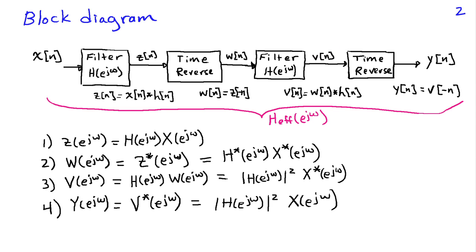Then we're going to apply a time reversal property to obtain the final output, Y(e^jω), which is going to be V*(e^jω). And replacing v with what we had in the previous step, we see that we end up with the magnitude of H(e^jω) squared times X(e^jω).